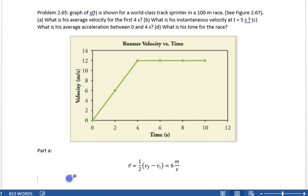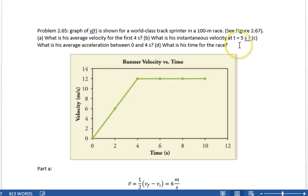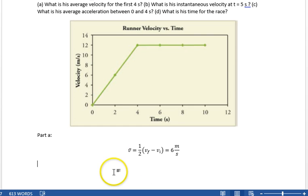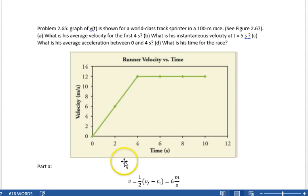Okay, part B. Part B is, what is his instantaneous velocity at t equals 5 seconds? So, t equals 5 seconds is right here. At t equals 5 seconds, he's going 12 meters per second. So, in part B, velocity is 12 meters per second.